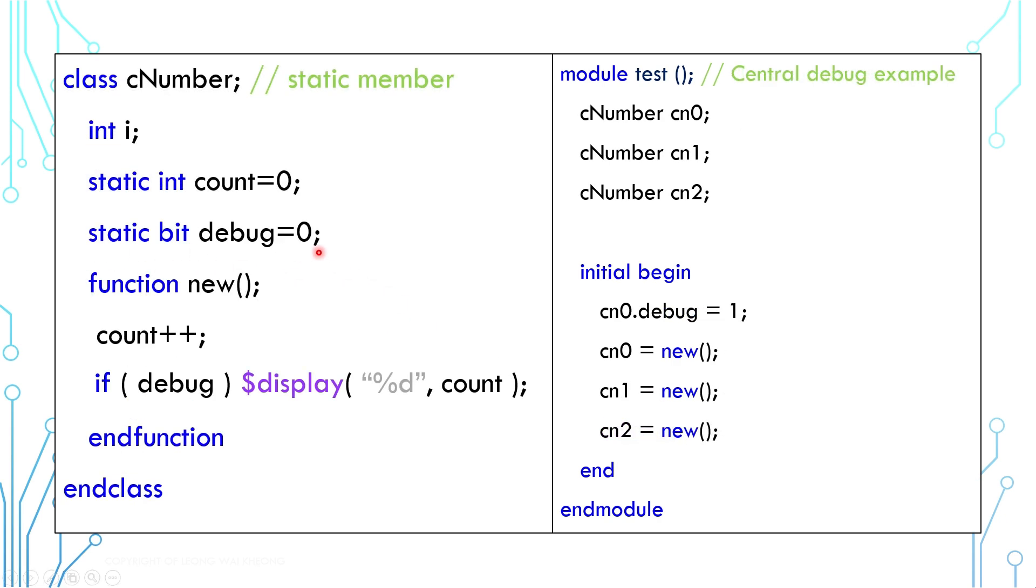This is a similar example but we added a new static bit debug. If we set debug to one, it enables a display message to all instances of this class. However, before we instantiate cn0, we cannot use cn0.debug.